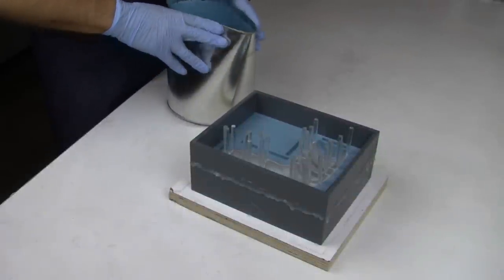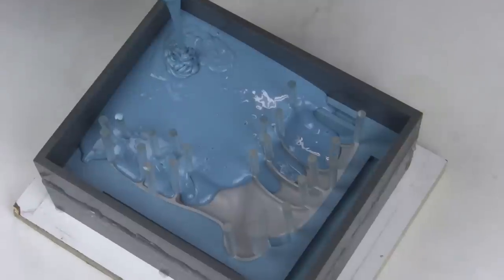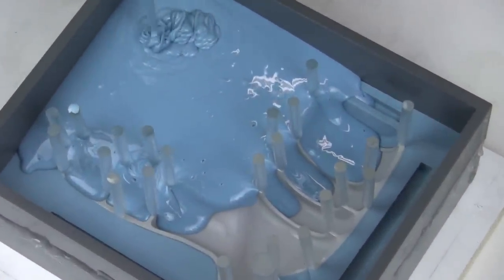Our silicone molding material is measured out, mixed, de-aired, and ready to pour. We are careful to pour slowly so our delicate vents don't get knocked over by the flow of the silicone.